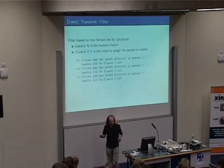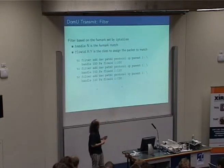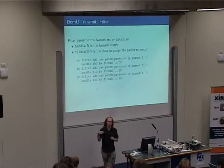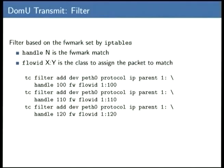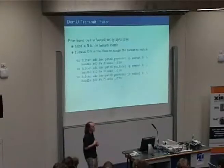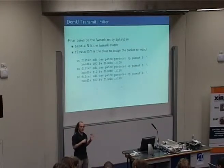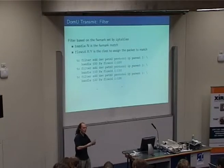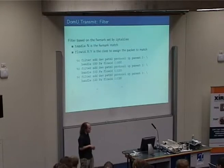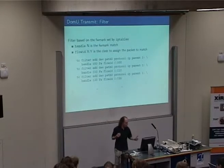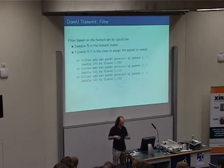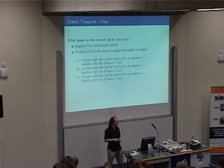The last TC step is the filter. As packets come through, we assign them to a class by hooking into the firewall mark set earlier using IP tables — those numbers 100, 110, 120. The default flow doesn't need an explicit filter as it will go there by default. These handle numbers are fairly arbitrary; I chose to reuse the same numbers. With that, we've set up all the rules as per the diagram with the green circles.